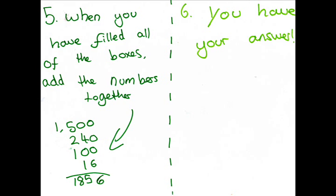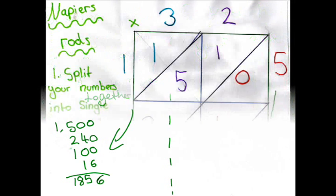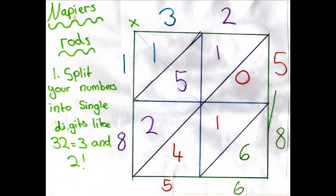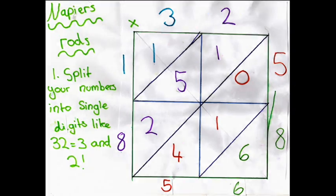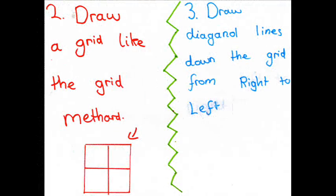Here we go! 2 x 1 is 2. 2 x 2 is 4. 2 x 3 is 6. 2 x 4 is 8. 2 x 5 is 10. 2 x 6 is 12. 2 x 7 is 14. 2 x 8 is 16.